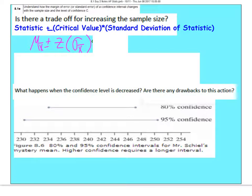In 8.1e, I want you to understand how margin of error, or standard error, of a confidence interval changes as the sample size of the confidence interval changes. So is there a trade-off for increasing the sample size?